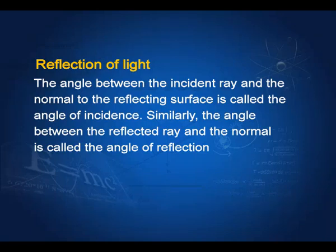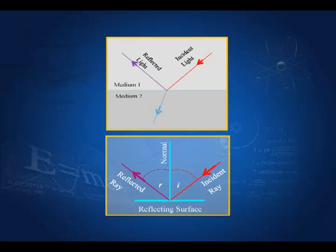The angle between the incident ray and the normal to the reflecting surface is called the angle of incidence. Similarly, the angle between the reflected ray and the normal at the point of incidence is called the angle of reflection. This is the incident light coming in, this is the boundary between two media — light gets reflected in this direction. This angle is the angle of incidence, and this is the angle of reflection, and these two angles are equal.